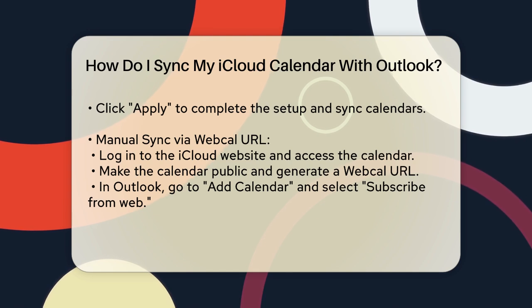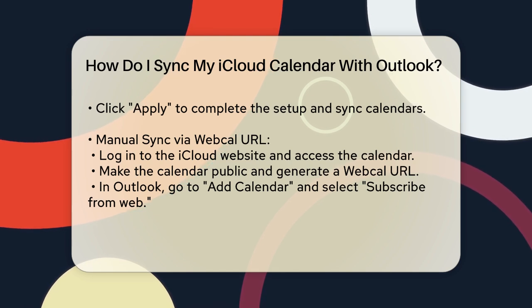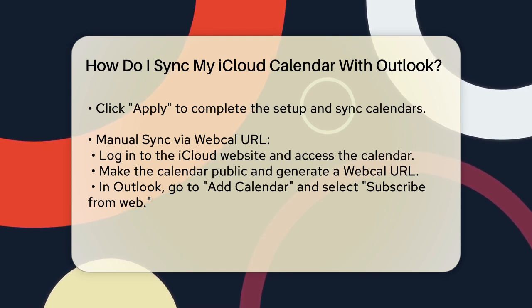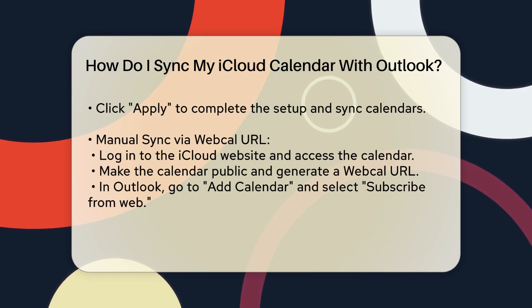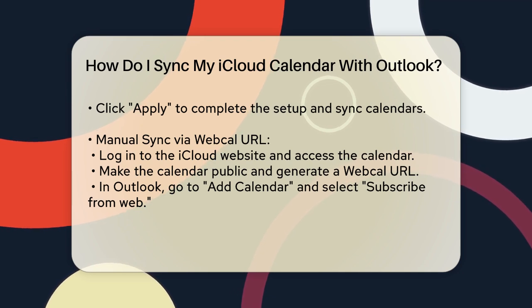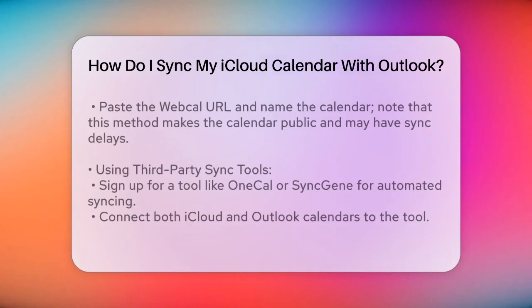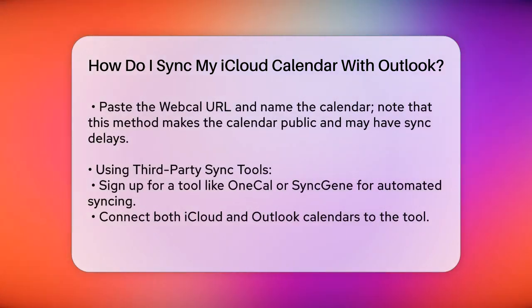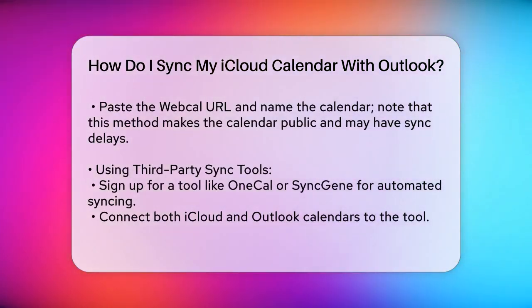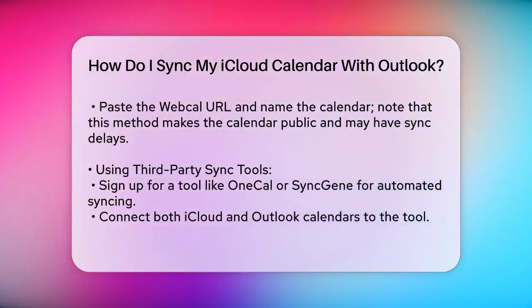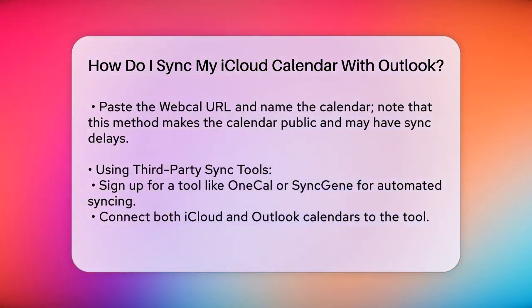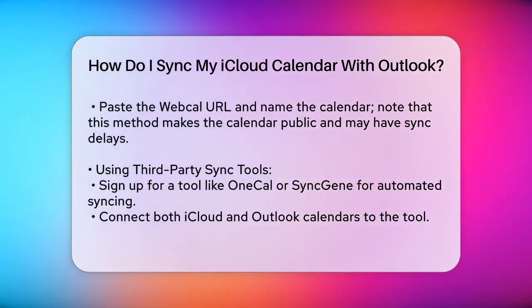Open Outlook, go to the Add Calendar section, and click Subscribe from Web. Paste the WebCal URL and give your calendar a name. This method is straightforward, but keep in mind that your iCloud calendar will be public and there might be a delay in syncing.